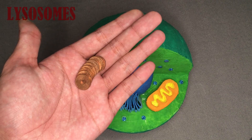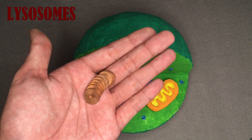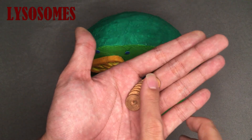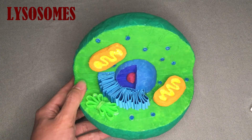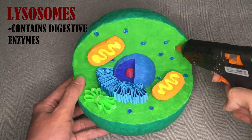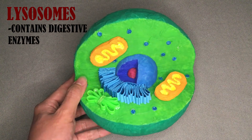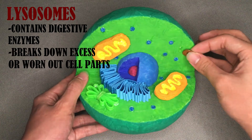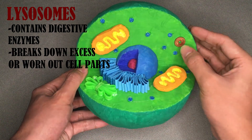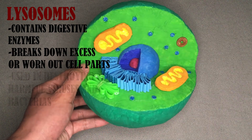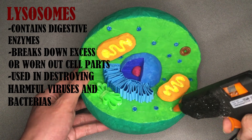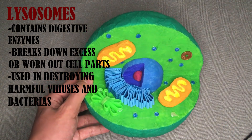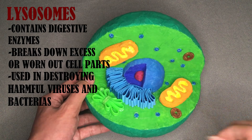The lysosome — as I like to call it, the martyr organelle — is also a membrane-bound organelle. It contains digestive enzymes that break down excess or worn-out cell parts. They may also be used in destroying viruses and bacteria that could harm the cell. They are the epitome of martyrship.